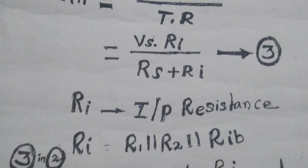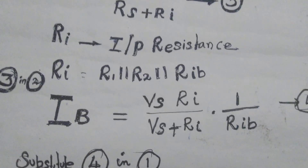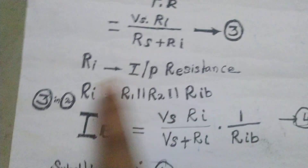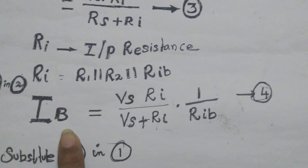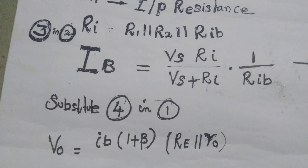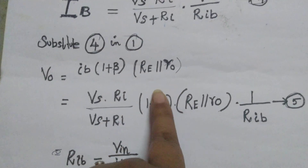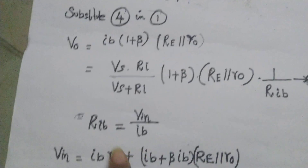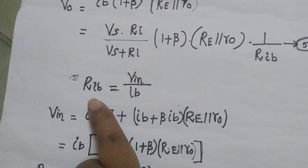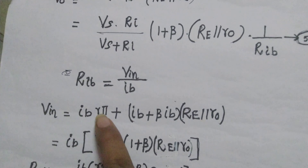Substituting the expression for VIN (equation 3) into IB = VIN/RIB gives equation 4. Then substituting equation 4 into the expression for V0 (equation 1) gives the value of V0. At this point, everything except IB is constant, so once IB is found, the full expression for V0 is determined. The 1/RIB term remains, so we must find RIB explicitly.